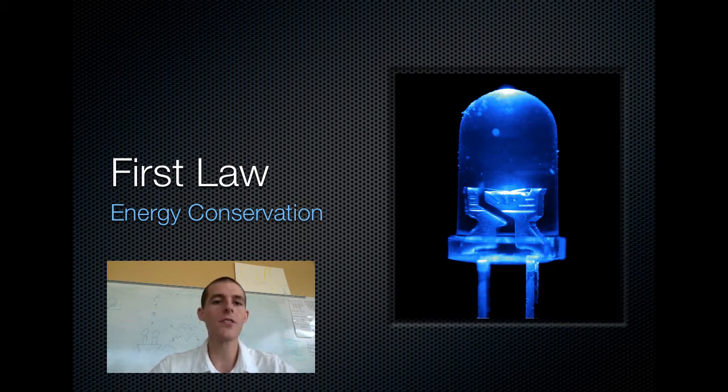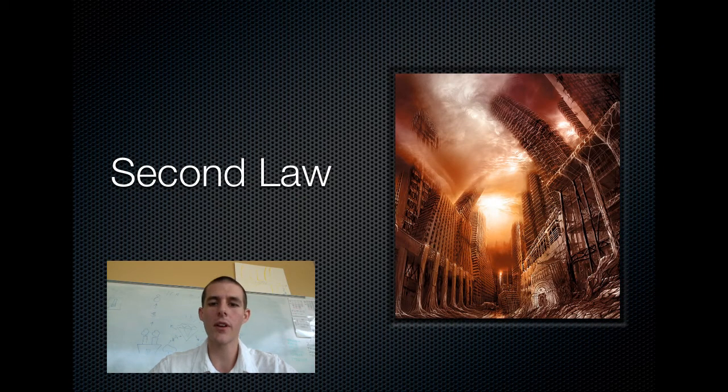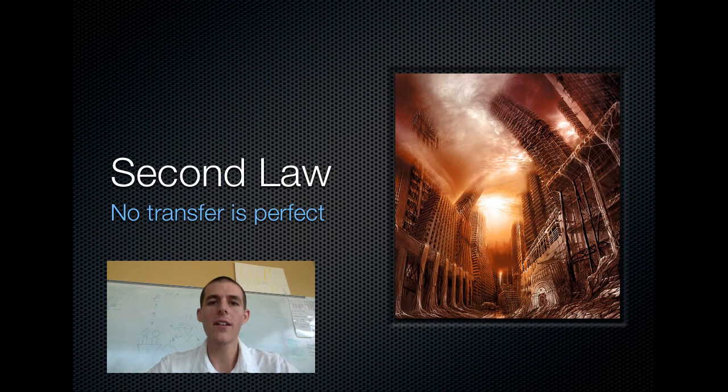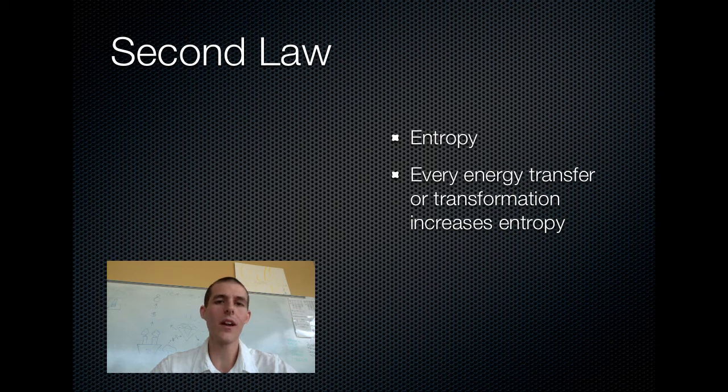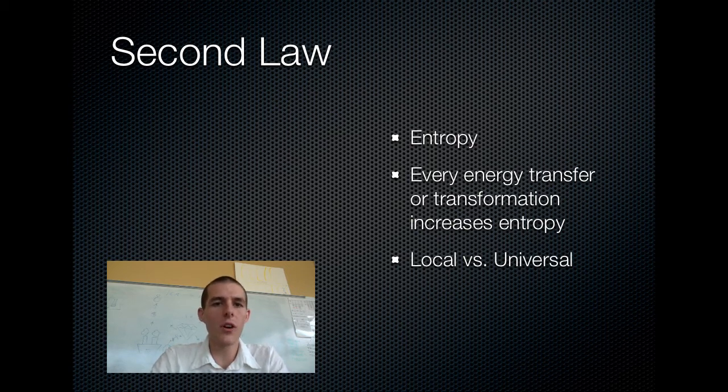First law, energy can't be created or destroyed, it just changes forms, which leads us to our second law of thermodynamics, which is that no transfer is perfect. So as our energy is changing from one form to the next, you always lose a little bit of that energy to heat. This law is also known as the law of entropy or the chaos law. Entropy just means disorder and the second law talks about the fact that left alone without any input of energy, all things will tend towards disorder. You know this by looking at your bedroom. If you don't put the energy into cleaning your bedroom, eventually it will become more disorderly.